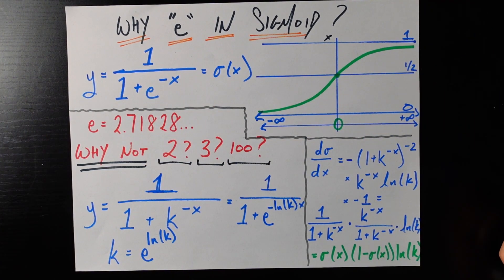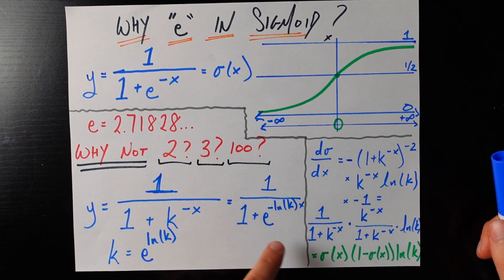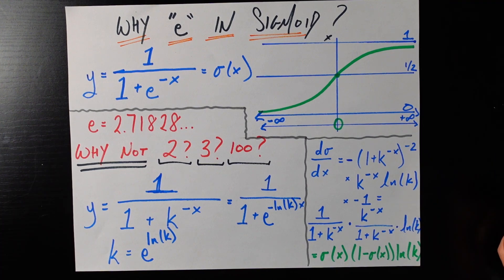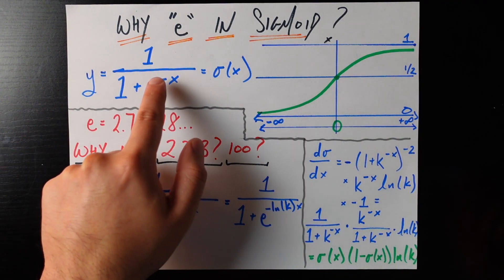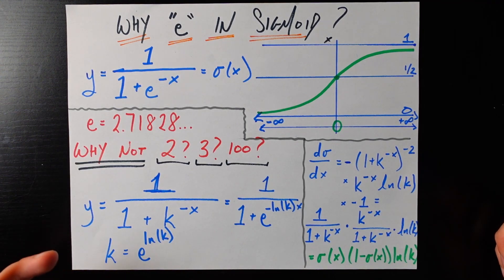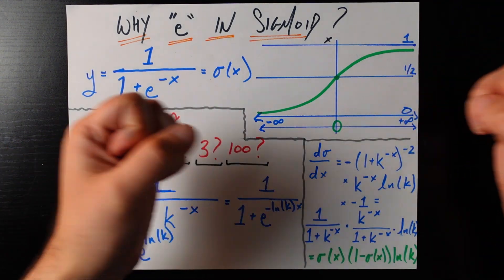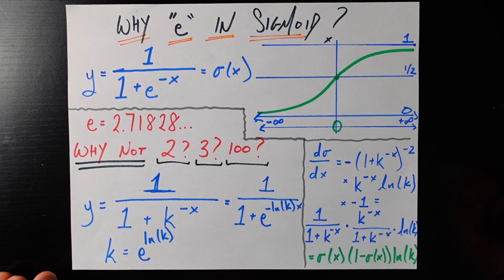Then you can just decompose that as 1 over 1 plus e again to the power of some constant natural log k times negative x. And all that means is that if we use some other number k in place of e, that's like adding some arbitrary constant into the exponent here which as we know and as we showed before is going to just stretch or squash the sigmoid by whatever degree you need in order for it to fit the data the best.